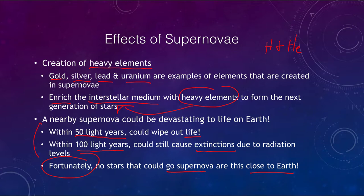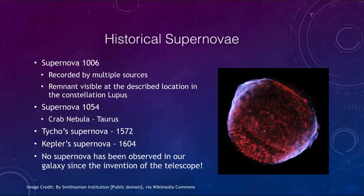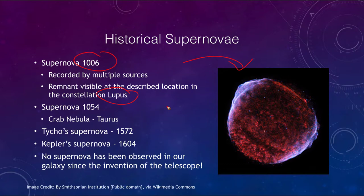When do we see supernovae? Let's look at some historical supernovae that have been recorded. The first is the supernova of 1006, which occurred over a thousand years ago. It was recorded by multiple sources, and the remnant is visible today in the constellation of Lupus. Records described the location and nearby stars, and we can point our telescopes there today and see the remnant.